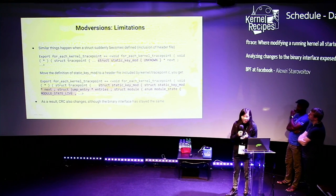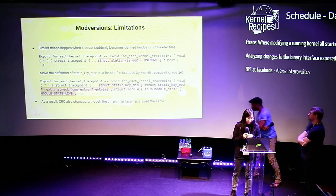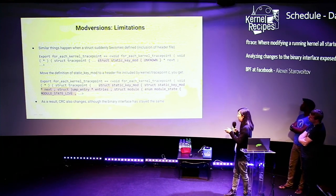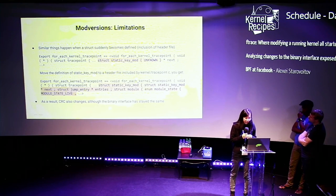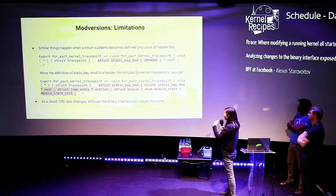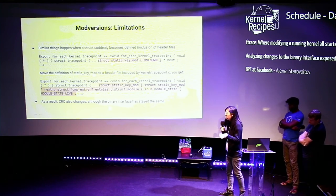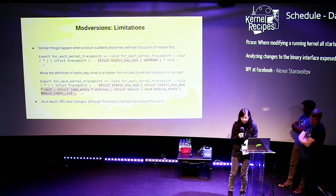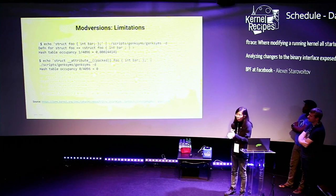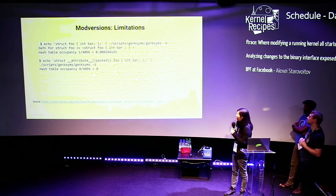Another example: since we're parsing each preprocessed C source file individually, the inclusion or exclusion of certain header files also affects the CRCs generated. If we move a definition of a struct like static_key_mod into a header file, that changes how the string representation of the expanded tree looks, changing the CRC — even though all we did was add a header file. That technically does not constitute a KABI breakage. Also, adding an attribute packed to a struct declaration breaks GenKSims and causes it not to produce a CRC at all.